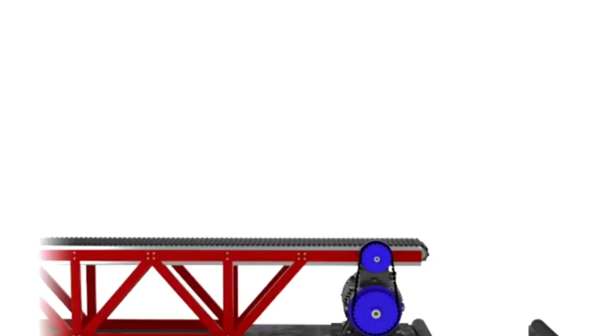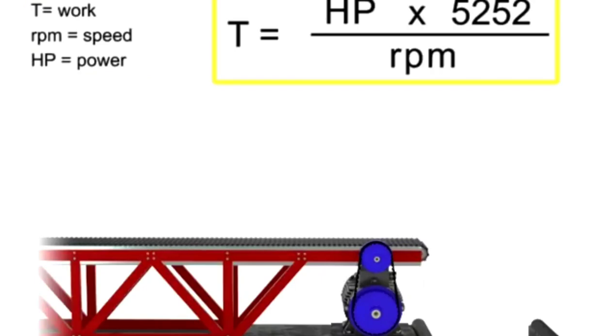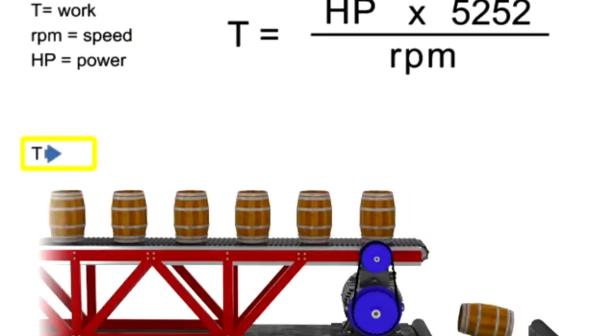You can manipulate the connection among speed, torque, and horsepower by understanding how they are related. The work accomplished here, the torque, is represented by the weight moving along the conveyor.